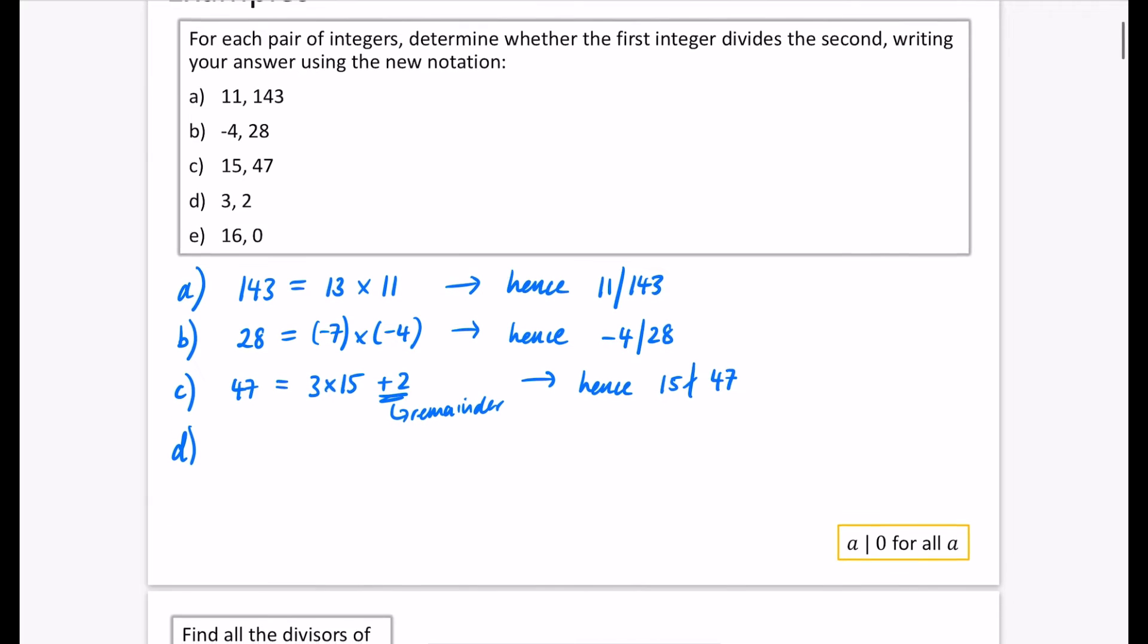Now part D of the question, we have 3 and 2. Well, if we're going to try and say if 3 is a factor of 2, well, kind of quite clearly, that's not going to be something that divides it. Because if we said with 3, well, 3 is just... oh no, we're doing the second number. So for us to do it as the second number, we're saying does 3 divide 2. 2 is 0 lots of 3 plus 2. So again, there is a remainder. Hence, we're going to say here that 3 does not divide 2 like this.